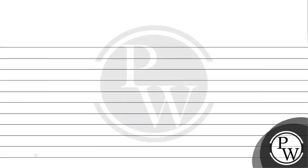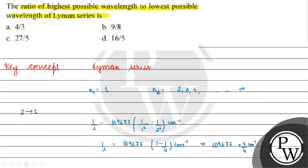Now we have to take the ratio lambda 1 by lambda 2. This equals 4 by 3 into 109677 by 1 upon 109677, which simplifies to 4 by 3 equals lambda 1 by lambda 2. So option A will be the correct answer for this question.